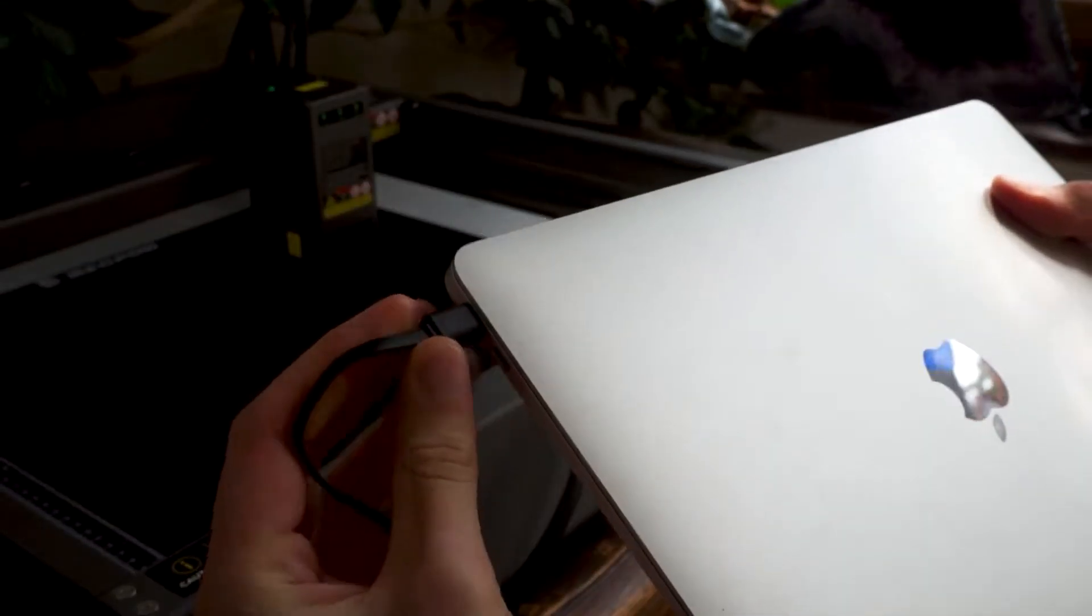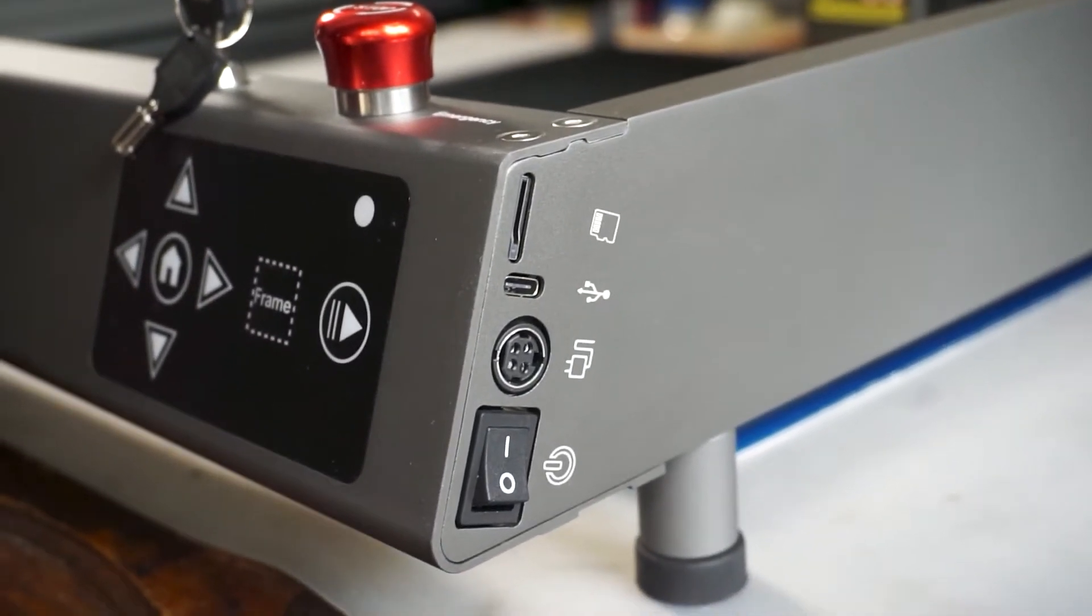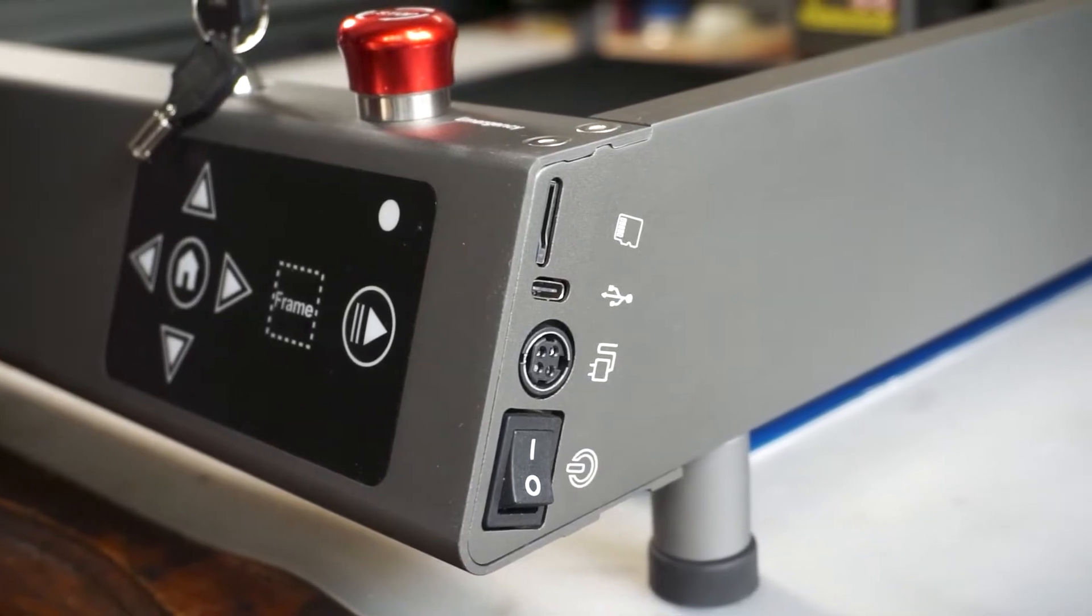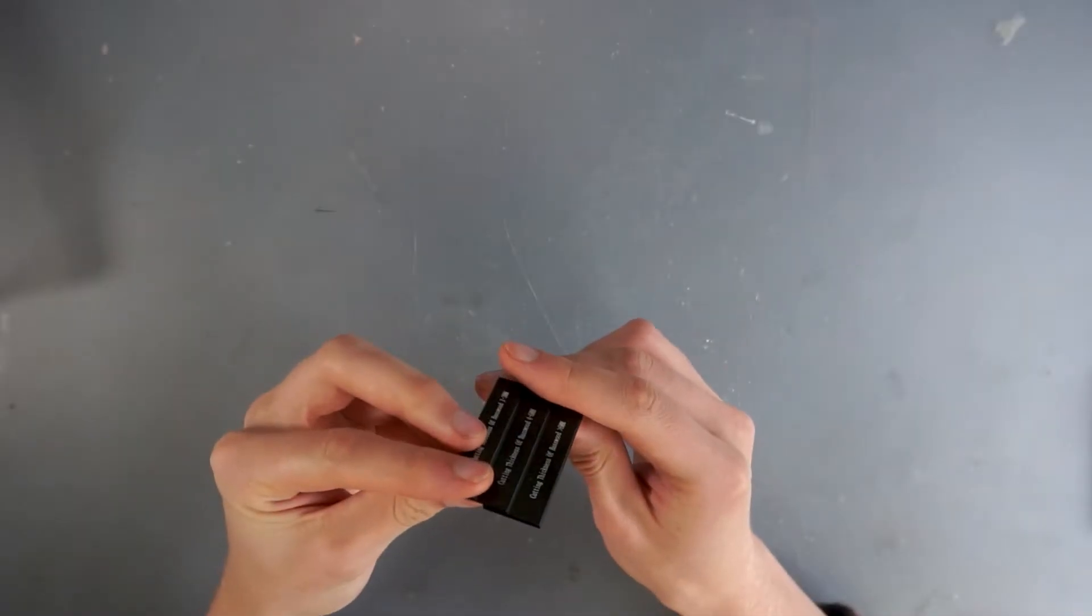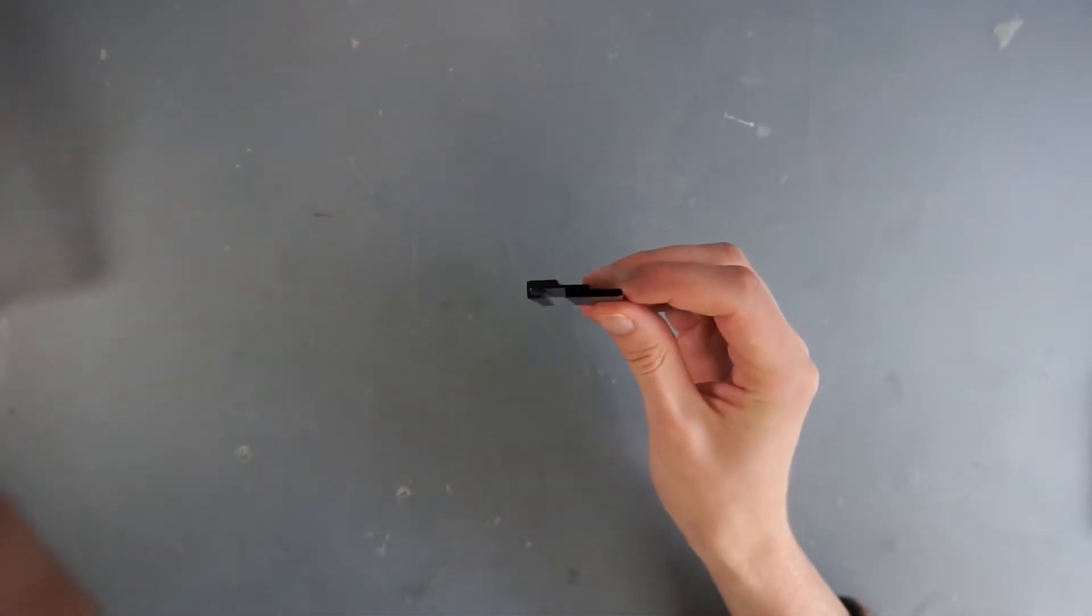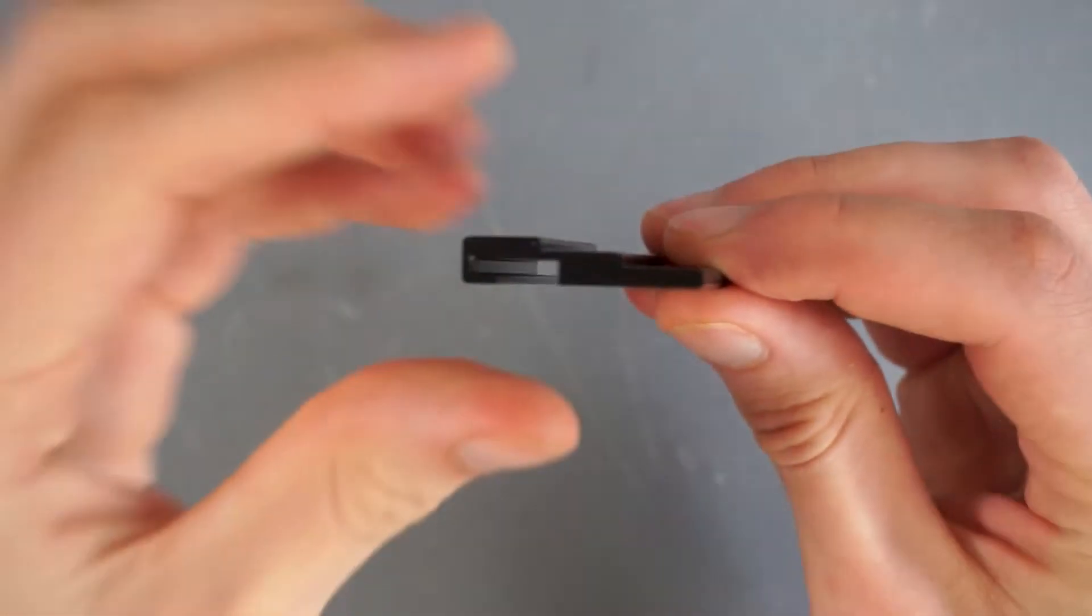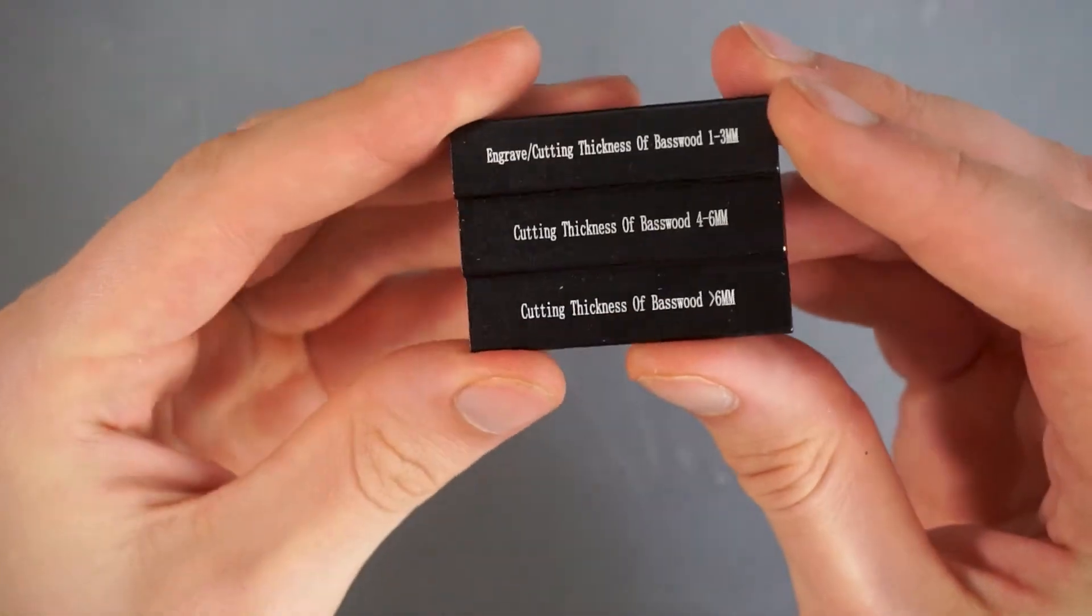Now to start a cut, you need to connect the machine to a PC via USB-C, or use the micro-SD memory card. You also need to prepare the machine by setting the laser cutting head to the correct height using this aluminum calibrating tool.